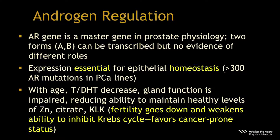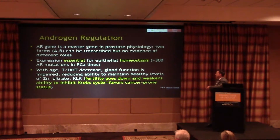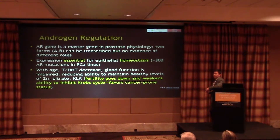This is regulated through androgens. The gene for the androgen receptor is referred to as a master gene in prostate physiology. There are two forms — A and B — that can be transcribed, though as yet there's no evidence for different roles for these two forms. Expression is essential for homeostasis. When targeting the prostate and considering relative hormone concentrations, it's essentially a battle to maintain the status quo. Over 300 androgen receptor mutations have been identified in prostate cancer cell lines.